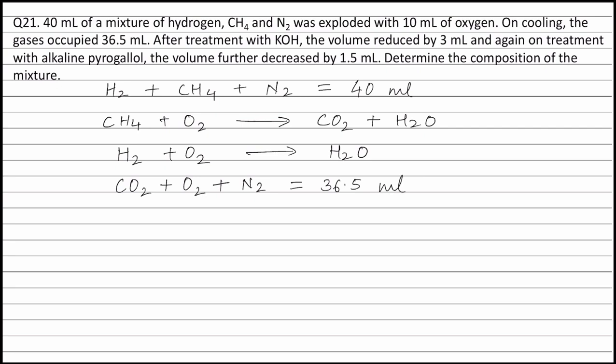On treatment with KOH, the volume is reduced by 3 ml because KOH absorbs the carbon dioxide. Therefore, volume of carbon dioxide is 3 ml. On treatment with Alkaline Pyrogallol, the volume further decreases by 1.5 ml because Alkaline Pyrogallol absorbs the Oxygen. Therefore, volume of Oxygen is 1.5 ml.